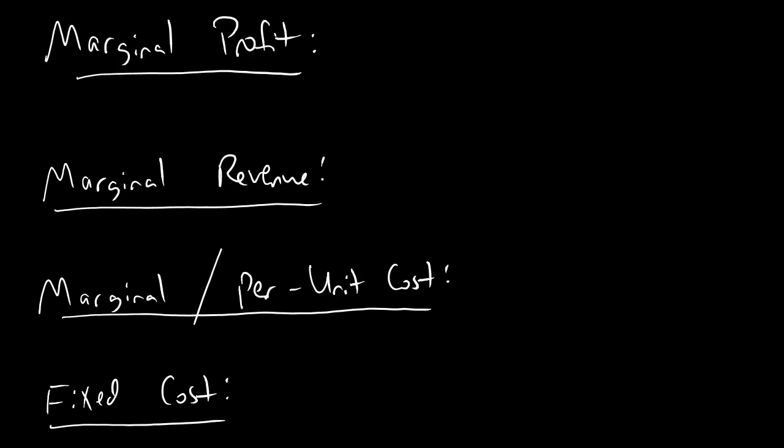All right, dudes, so we just finished talking about break-even points, and we're going to go on from there to a couple of fancy terms that you're going to see recur throughout 1.4, and these terms will even come back in later chapters. And most of these terms have the word marginal in front of them. So here's what we're looking at. Marginal profit, marginal revenue, marginal cost, and fixed cost. Now some of these we talked about already.